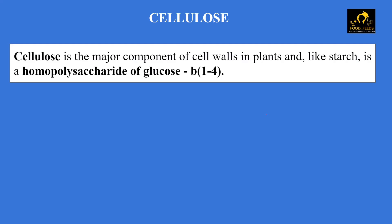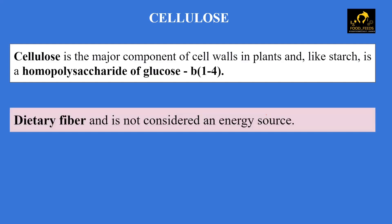The last polysaccharide is cellulose. Cellulose is the major component of cell walls in plants. It is similar to starch as a homopolysaccharide of glucose, but the key difference is that cellulose has beta-1,4 glycosidic linkages. Because humans lack the enzyme to digest it, cellulose is defined as dietary fiber and provides no energy. Some studies suggest colon bacteria may help digest cellulose, but without confirmed evidence, it is still classified as dietary fiber.